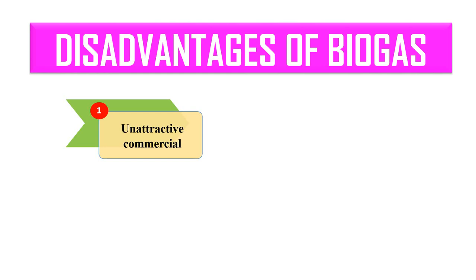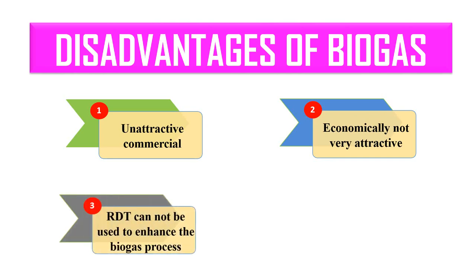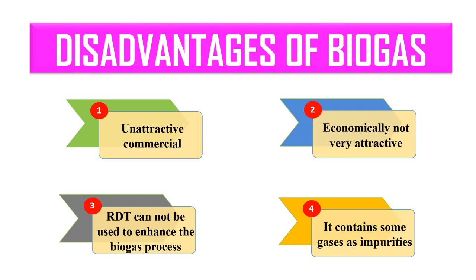Biogas also has some disadvantages. Its energy value is rather low, making it sometimes unattractive at the commercial level and not economically viable at large industrial scale. Recombinant DNA technology and strain improvement cannot be applied, so the only improvements possible are through optimizing environmental conditions. Additionally, biogas contains impurities and unwanted gases that may attack or damage metal parts of internal combustion engines.